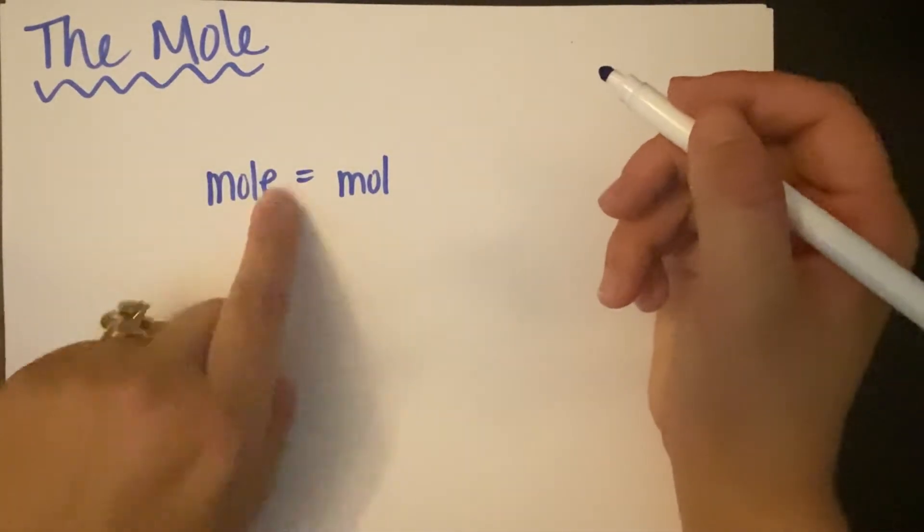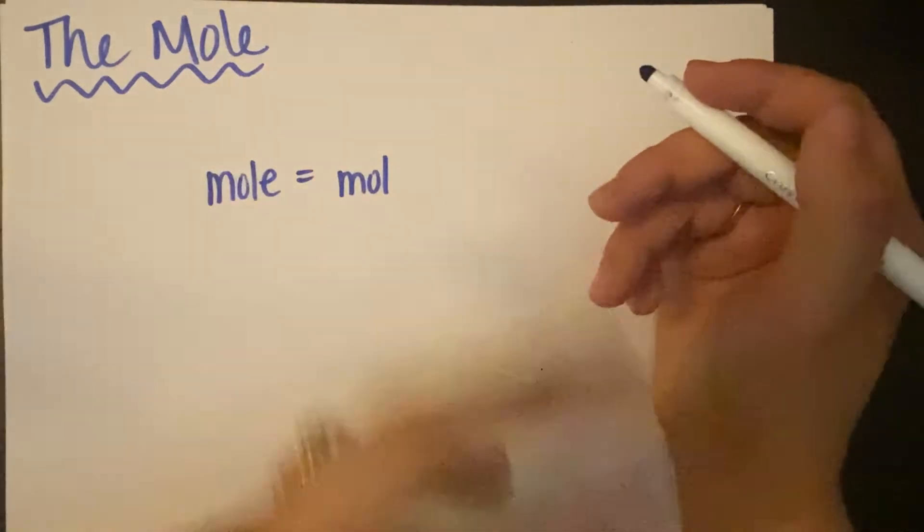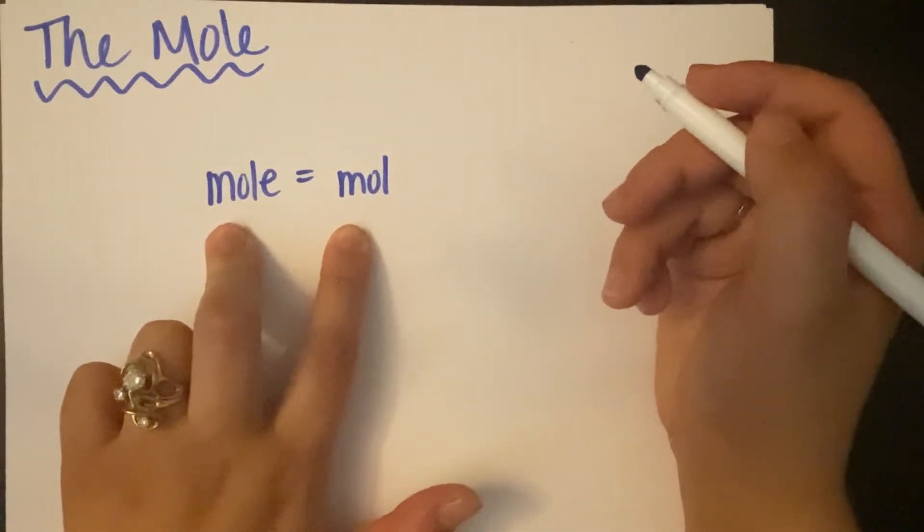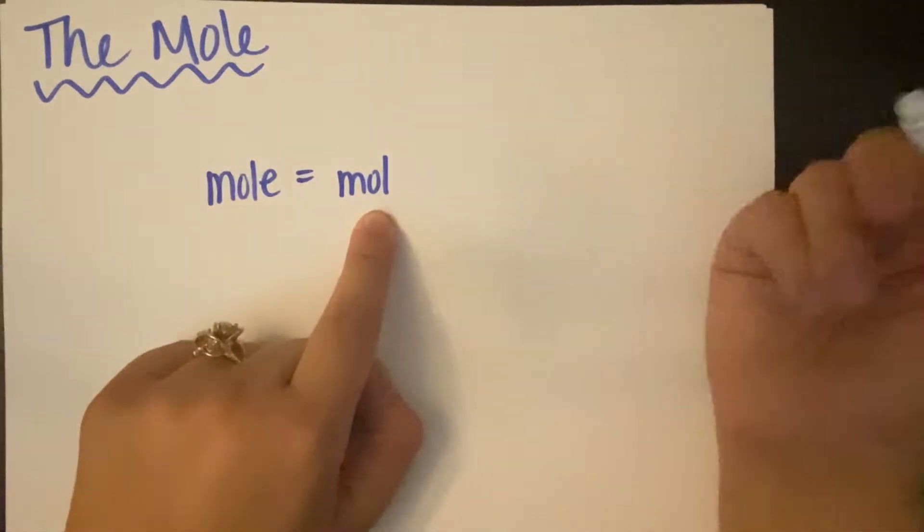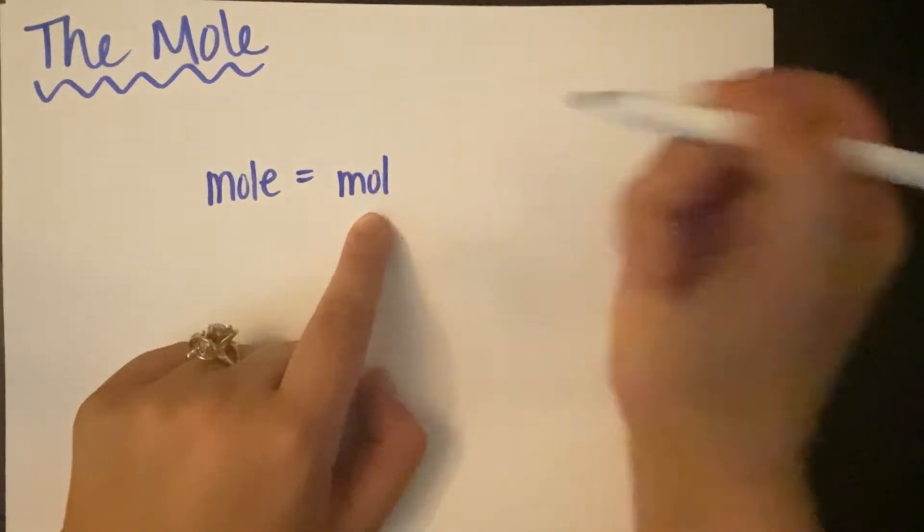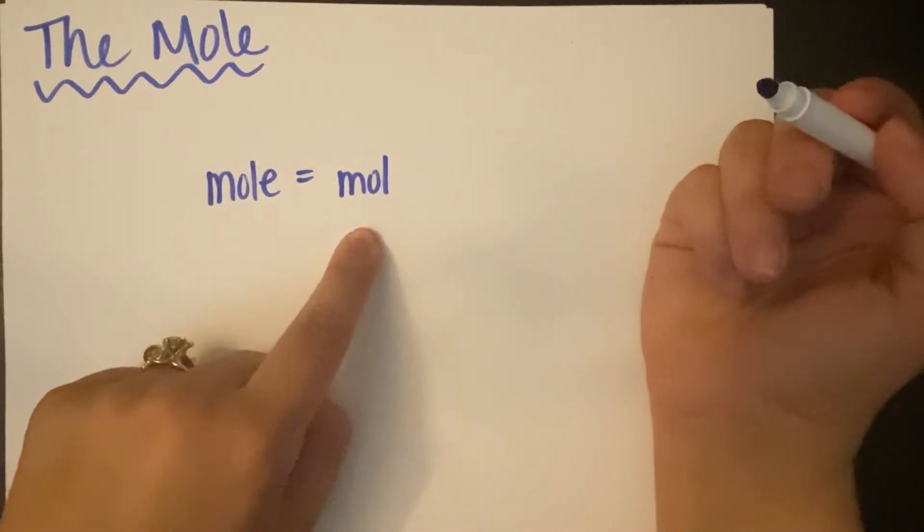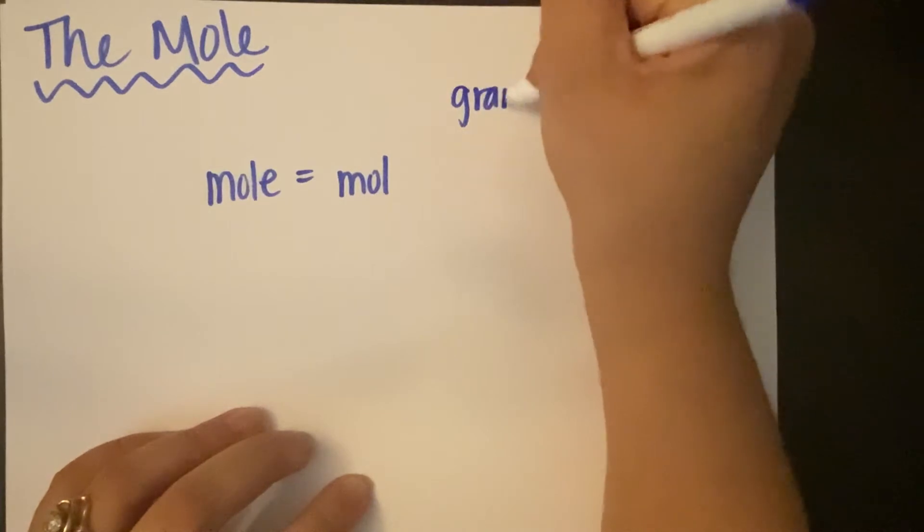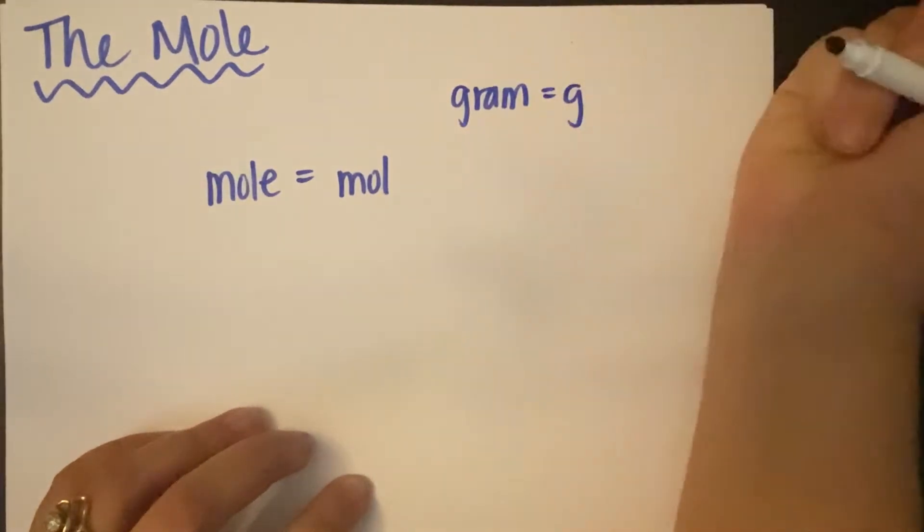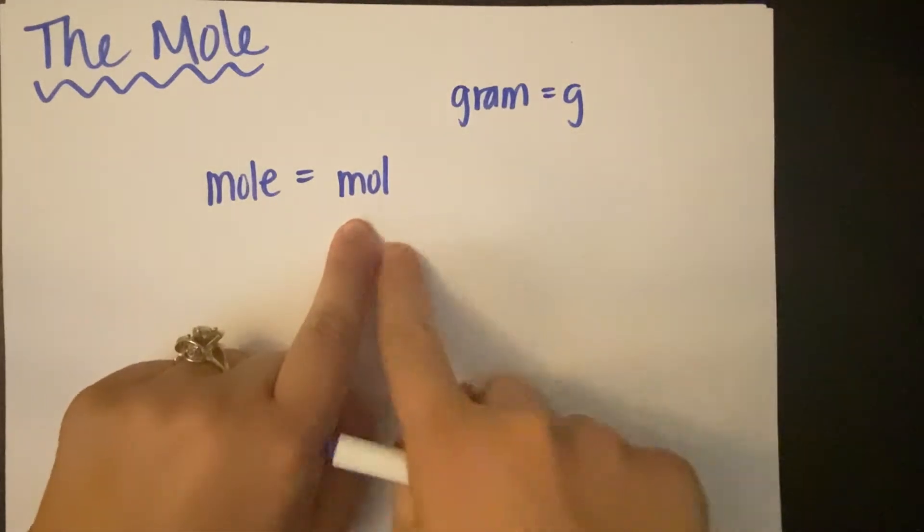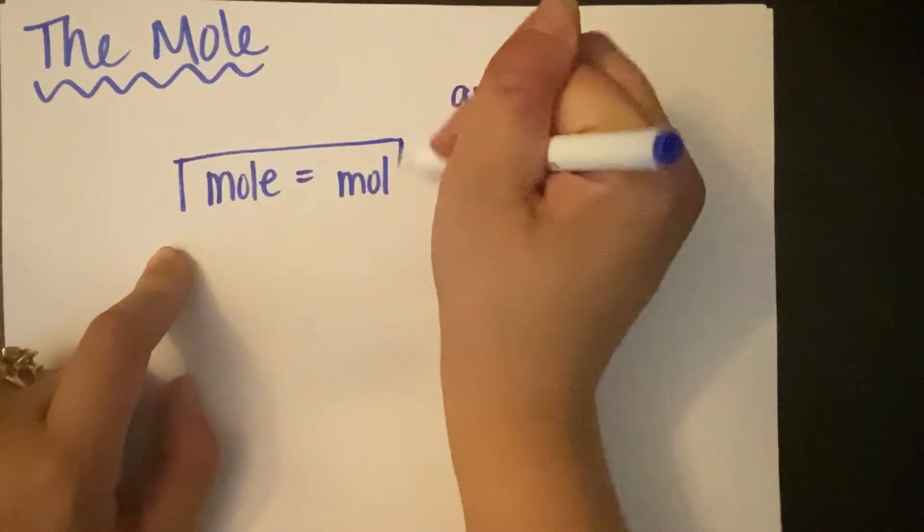First, just to make sure everyone understands, the mole is the actual unit, and the way we abbreviate the mole is M-O-L. We save ourselves so much time by just not writing out that E at the end. Scientists, we like to abbreviate as much as possible, so one letter less is good.